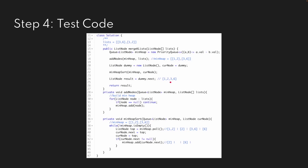After we're done with implementation, step four is to test the code. When I say test the code, I don't mean just clicking compile to see the result — I mean stepping through each and every single line of code and testing with an actual test case. For example, here we have node 3 and node 1, and the goal is to merge these link lists into one single list. We start by adding all the nodes to the min heap.